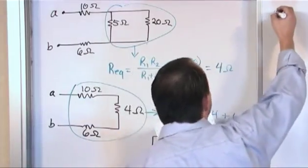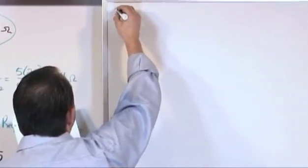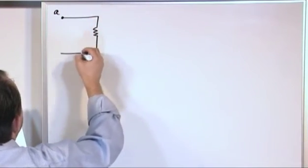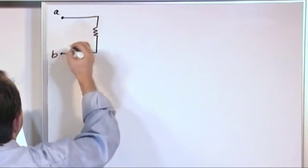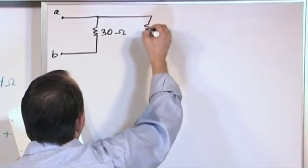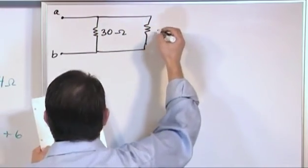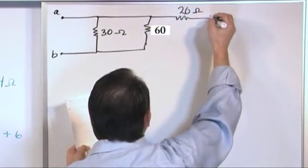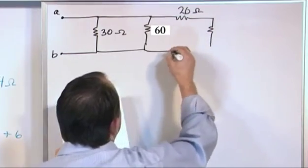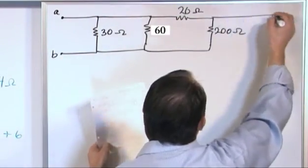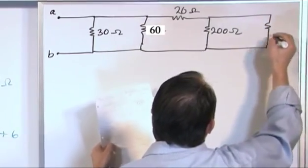Let's do one that's a little more complicated. So let's say again we have terminal A. We're going to have a 30 ohm resistor coming down here to terminal B, and then we're going to have another leg here that's going to be 60 ohms, and then another leg up here 20 ohms, and another leg here, let's pop up to 200 ohms, and then we'll have 50 ohms.